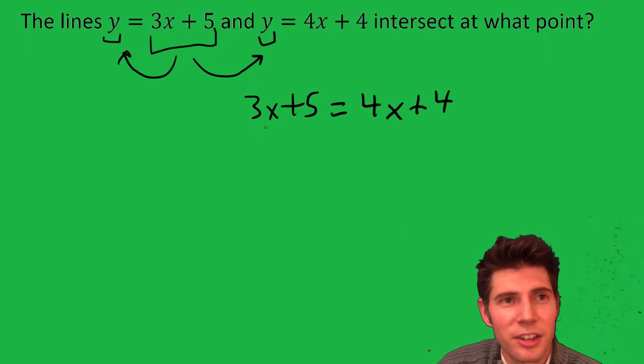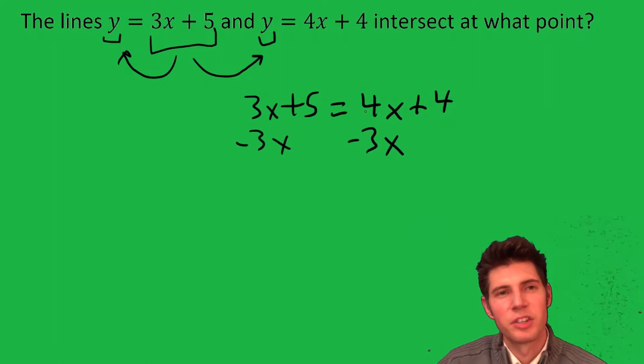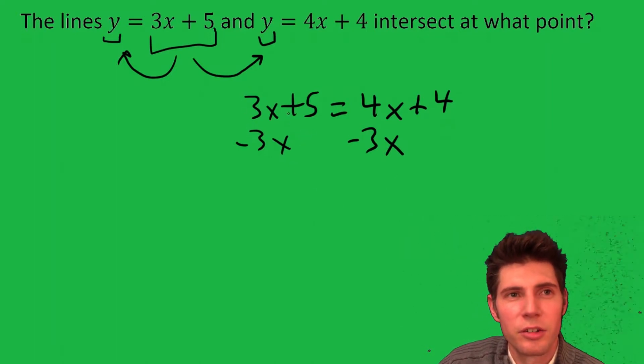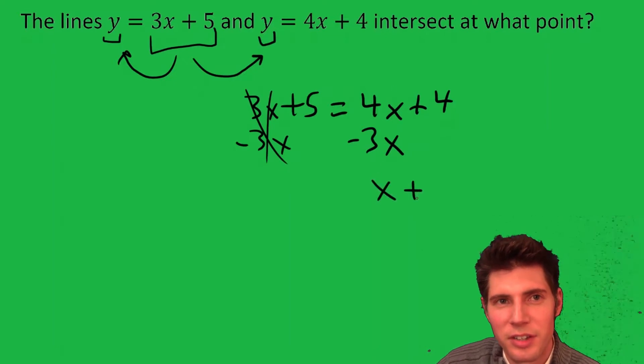Now let's get the x's together. I'm going to choose the smaller one, minus 3x minus 3x. The reason I chose the smaller one is if we subtracted the 4x from both sides, it would be negative on one side. So I'm choosing the smaller one. 3x's cancel and 4x minus 3x is x, so x plus 4 equals 5.